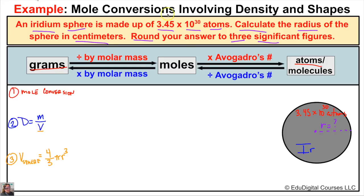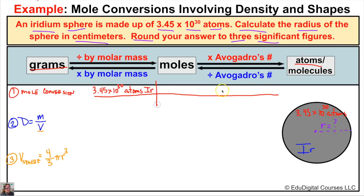So let's start with our very first step — mole conversion. We are starting with 3.45 times 10 to the 30th atoms of iridium. We need to determine the mass in grams of this many atoms. Since we're starting with atoms, first we're going to convert to moles. We want to cancel out atoms of iridium, so we put atoms of iridium in the denominator of our next fraction, and these will cancel out.